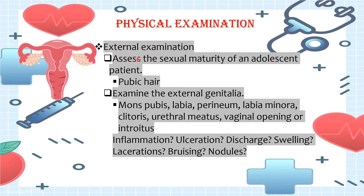For the external examination, assess the sexual maturity of an adolescent patient and note the presence of pubic hair. In examining the external genitalia, include the mons pubis, labia, perineum, labia minora, clitoris, urethral meatus, and vaginal opening or introitus. Check for any inflammation, ulceration, discharge, swelling, lacerations, bruising, or presence of nodules.